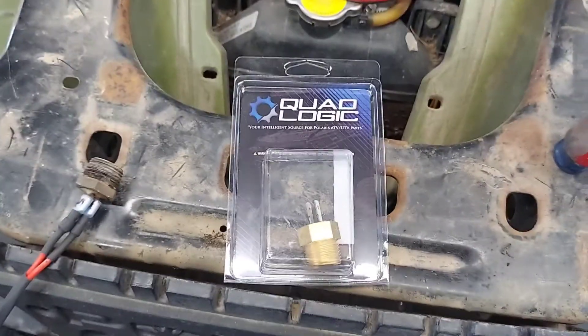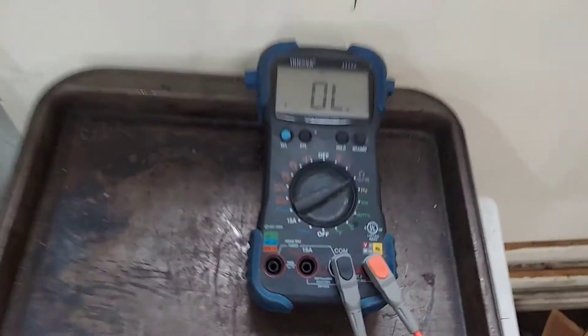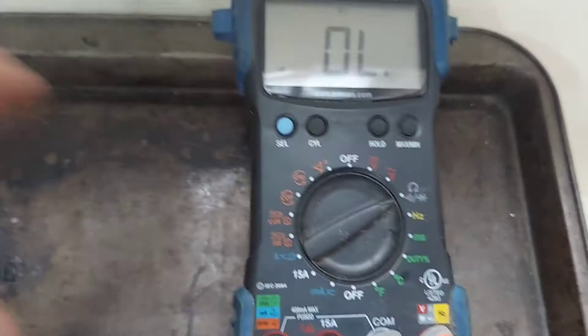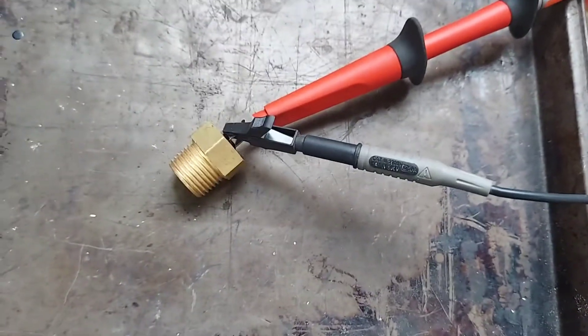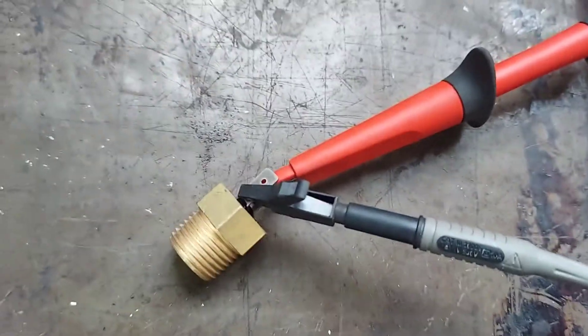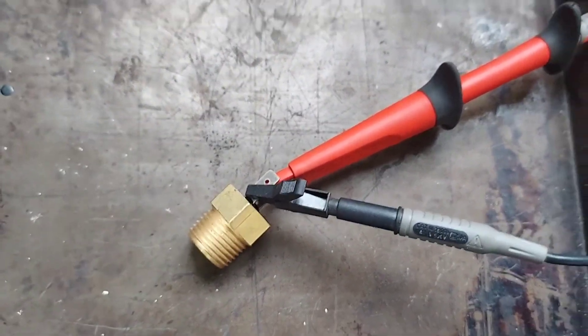I've got my meter set to ohms and I have it set to audible so it'll beep when there's continuity. One probe on each of the blades here, make sure they don't touch. I tested the meter beforehand to make sure that these cables are functioning and they are.